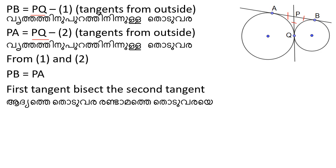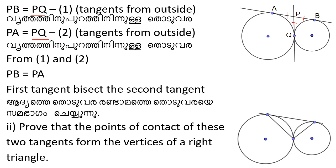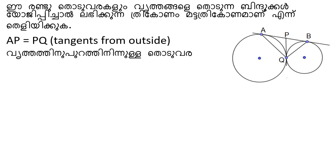The first tangent bisects the second tangent. Prove that the point of contact of these two tangents from the vertices of a right triangle. The common tangent point joined gives the right triangle. Now we go to APM and PQ — the right triangle.